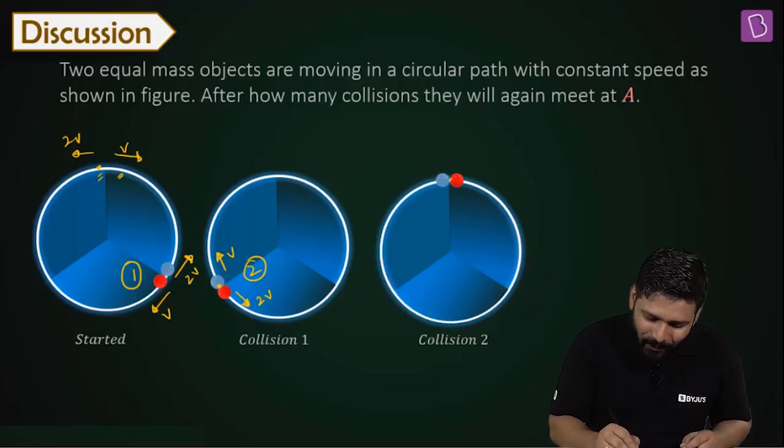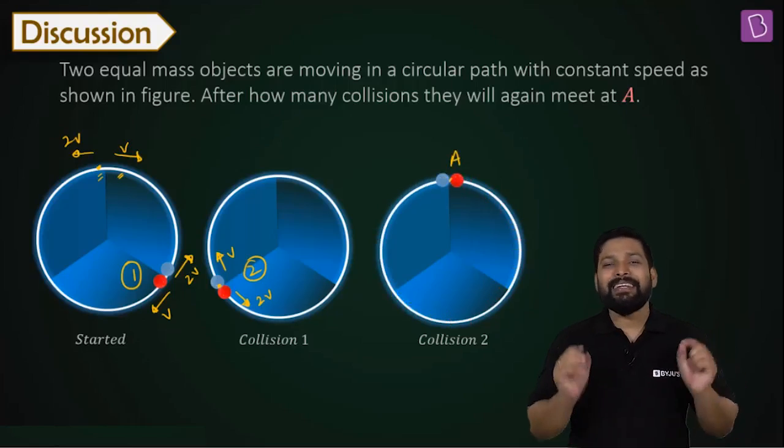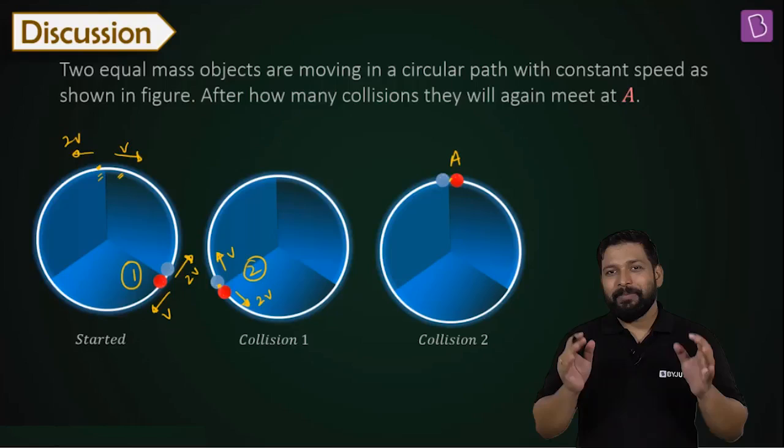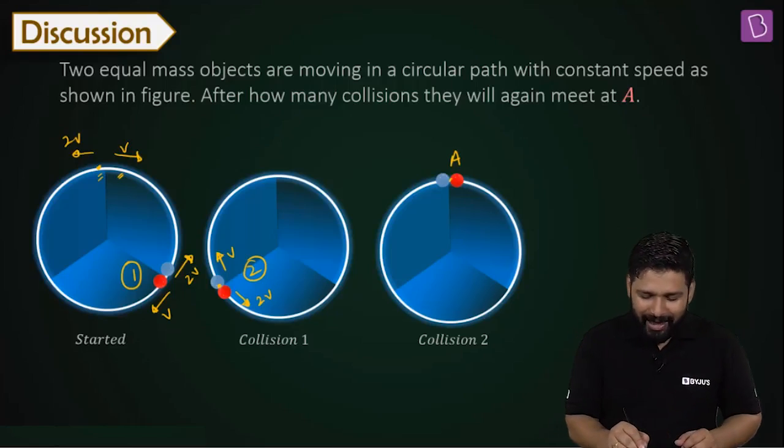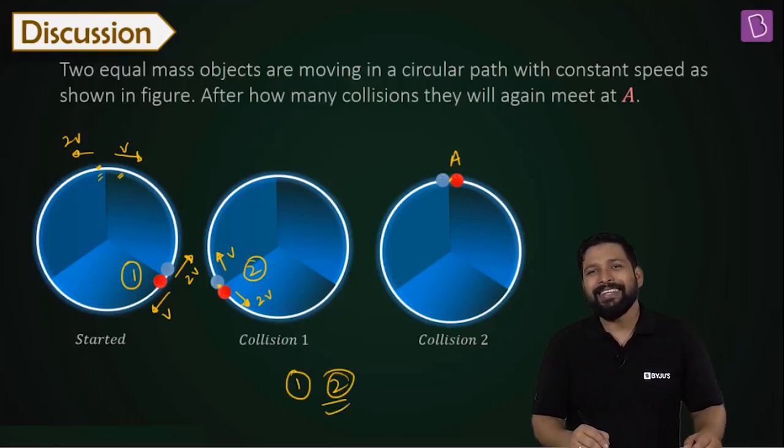So this is again point A. They meet again at point A. When they meet again at point A, how many collisions have happened? Collision number one and collision number two. Two collisions have already happened.